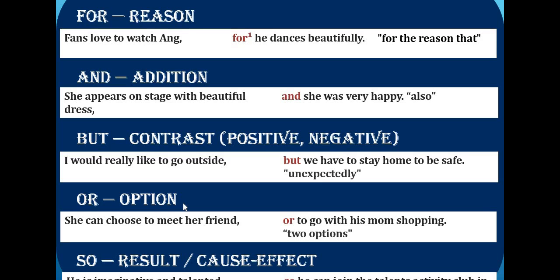OR is used when you have more than one option or choice and you need to choose. Example: 'She can choose to meet her friend or to go with her mom shopping.' I have two options connected with OR because I need to choose only one.